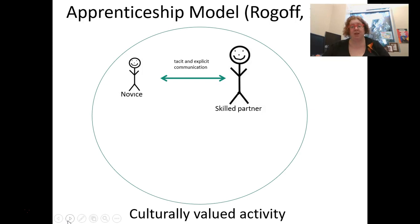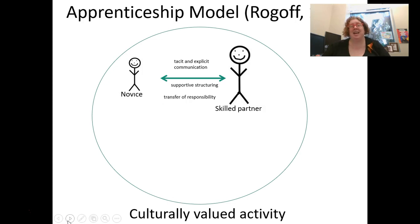We want our tacit and our explicit communication to be the same. We also have supportive structuring — the way in which we set up sub-goals so that we can allow our students to be successful, which might also include providing a safe environment for our novice to practice. And then we have the transfer of responsibility — the idea that more and more our students take over responsibility for that task.